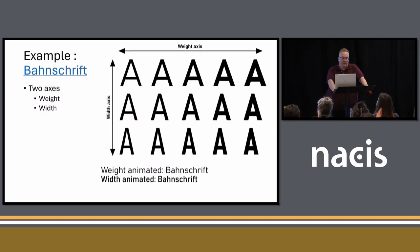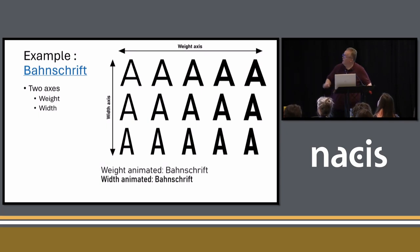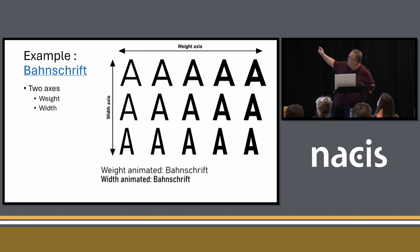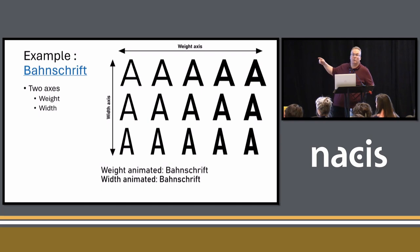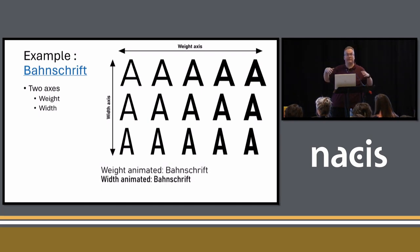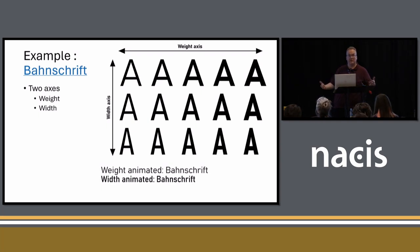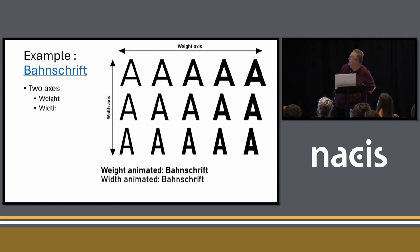Here's an example of a variable font — Bonschrift. It has two axes: weight and width. You can see the variation across the top getting heavier in weight, and top to bottom getting narrower in width. Now, if each one of these were a traditional static font, each letter A would be from a different font file. With variable fonts, they're just variations of a single font. And you can see the animation at the bottom animating a weight change and animating a width change.